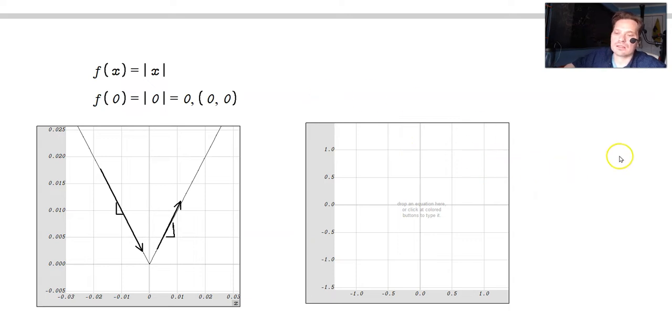So what is this telling us in terms of a graph? f prime, for example, of negative 1. That's no problem. That's just negative 1. Negative 1 goes in, negative 1 comes out. There's a value of f prime. f prime of, say, 0.5. No problem. Look at the graph. 0.5 goes in, 1 comes out. Not an issue.